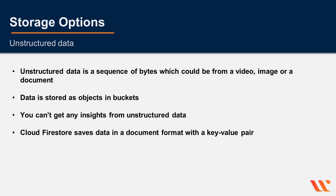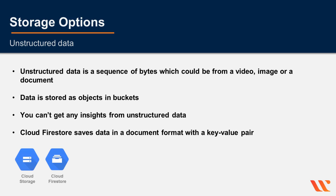In Cloud Storage, data is stored as objects in buckets. One thing to note about unstructured data is you can't get any insights from it because it's just a jumble of bytes. Cloud Firestore is a different type of storage that saves data in a document format with a key-value pair. In GCP you have Cloud Storage and Cloud Firestore.